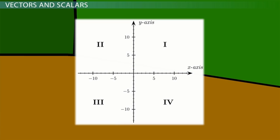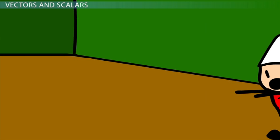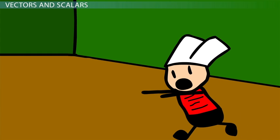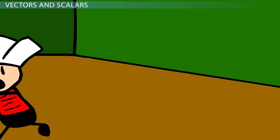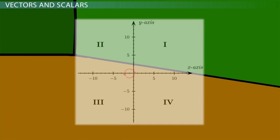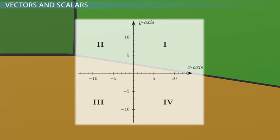Position is a vector because direction matters, but distance is a scalar. Distance is how far you've traveled. For example, if you run around your room with the axes on the floor, you might run a really long way until you've gone a total of 50 meters. But your position isn't 50 meters. Your position might be negative 3 meters on the x-axis and positive 4 meters on the y-axis. The direction you ran made no difference to your distance — you still traveled 50 meters. So with distance, direction doesn't matter. Distance is a scalar.